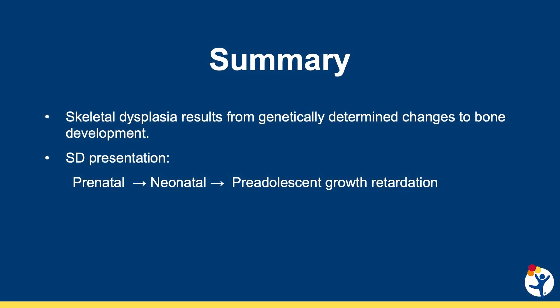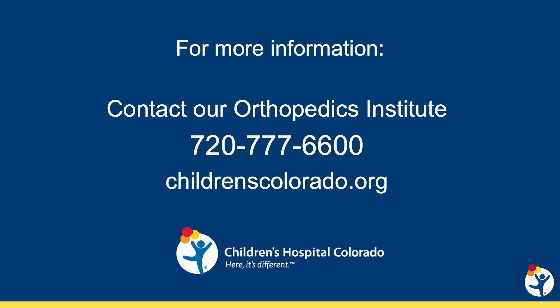In summary, skeletal dysplasias result from genetically determined changes in bone development. They can present at any age, but most commonly are prenatal or neonatal presentations, and less commonly just before the preadolescent growth spurt. Red flags include disproportionate short stature, bilateral Perthes disease, or thoracolumbar gibbous deformity. Physical exam and skeletal survey are critical to narrowing the diagnosis and guiding testing, which most importantly includes a gene panel for skeletal dysplasia, but may also include urine substrate analysis or enzyme testing. Please feel free to refer a patient to our Orthopedic Institute at Children's Hospital Colorado.